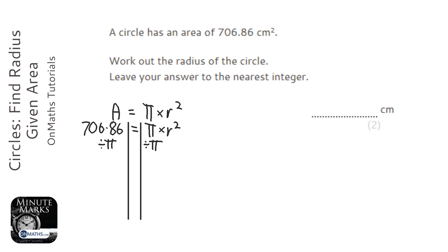So I'll get my calculator out. 706.86 divided by pi. And it gives me the answer 225.000 and so on. And I'm going to leave that in my calculator. And now that gives us r squared.